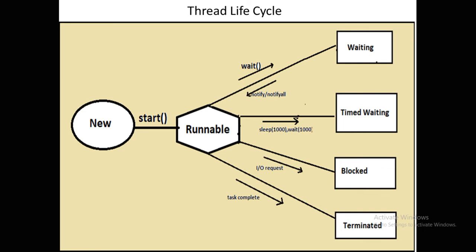The first is the Waiting state. The Waiting state occurs when you call the wait() method on a thread. It can wake up from the Waiting state when you use notify() or notifyAll(), as you can see on the screen. notify() is used to wake up one thread, while notifyAll() is used to wake up all threads that are in the Waiting state, and they will again come to the Runnable state.